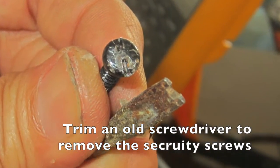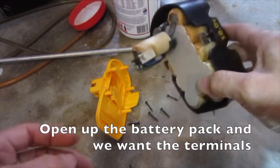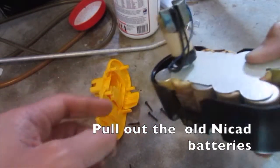Trim an old screwdriver to remove the security screws. Open up the battery pack and we want the terminals. Pull out the old NICAD batteries.